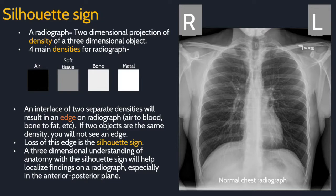When looking at a radiograph, one of the most important concepts to understand is the silhouette sign. Remember that a radiograph is a two-dimensional projection of density of a three-dimensional object. White is more dense and dark is less dense. Here are the four basic densities of a radiograph: air, soft tissue, bone, and metal.